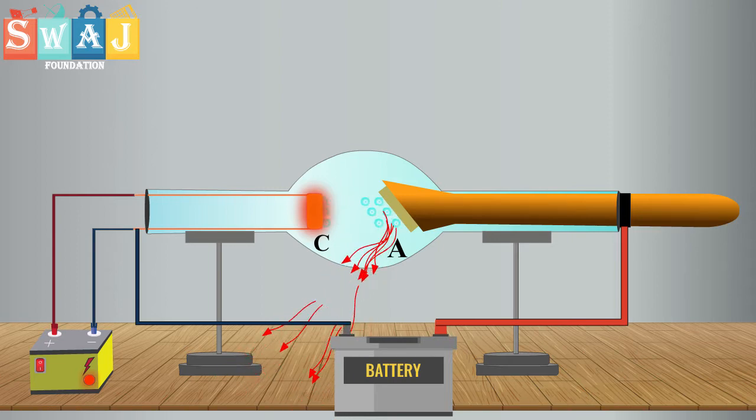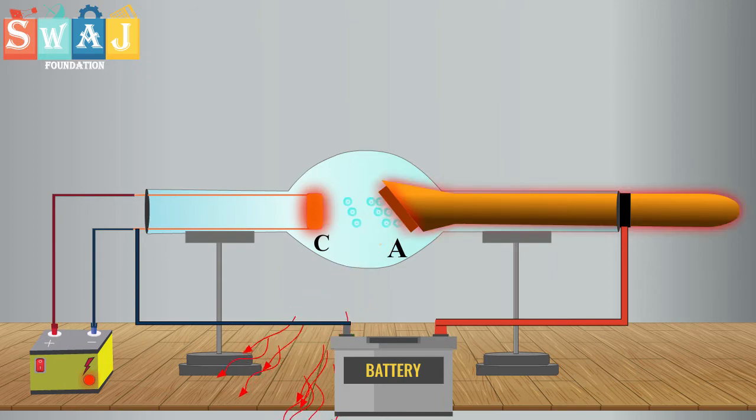Electrons are targeting a tungsten disk with a large amount of kinetic energy. The major part of the energy of incident electrons gets converted into heat and the remaining part appears in the form of X-rays.